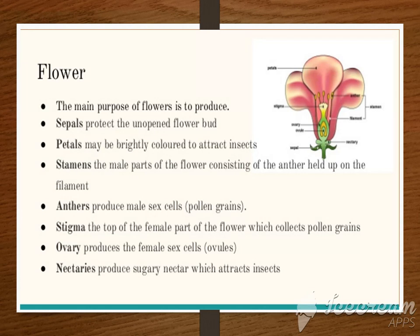What is the main purpose of flowers? The answer is reproduction. As I told you before, the flower is basically the reproductive part of the plant — reproductive in the sense that new plants will grow. There are two parts of the flower, which are the male and female parts.